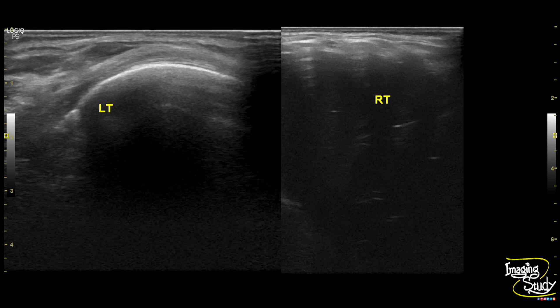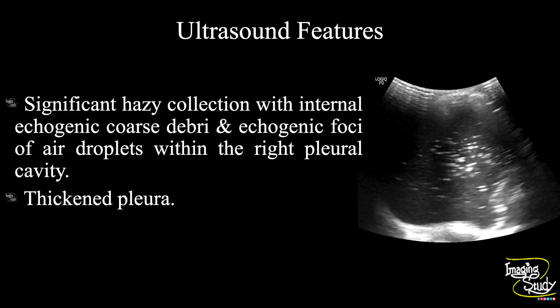This indicates the fluid is situated within the two layers of pleura. In summary, a significant hazy collection with internal echogenic coarse debris and echogenic foci of air droplets are seen within the right pleural cavity. The pleura appears thickened. So the diagnosis is pleural empyema.